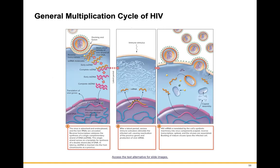The general multiplication cycle of HIV: the virus is absorbed and endocytosed, twin RNAs are uncoated, and reverse transcriptase catalyzes synthesis of a single complementary DNA strand. This serves as the template for double-stranded DNA synthesis. In latency, double-stranded DNA is inserted into the host chromosome as a provirus. After a latent period, immune activators stimulate the infected cell, causing reactivation of provirus genes and production of viral mRNAs. HIV mRNA is then translated into viral components such as the capsid, reverse transcriptase, and spikes. Viruses are assembled and bud from the infected cell, lysing it.